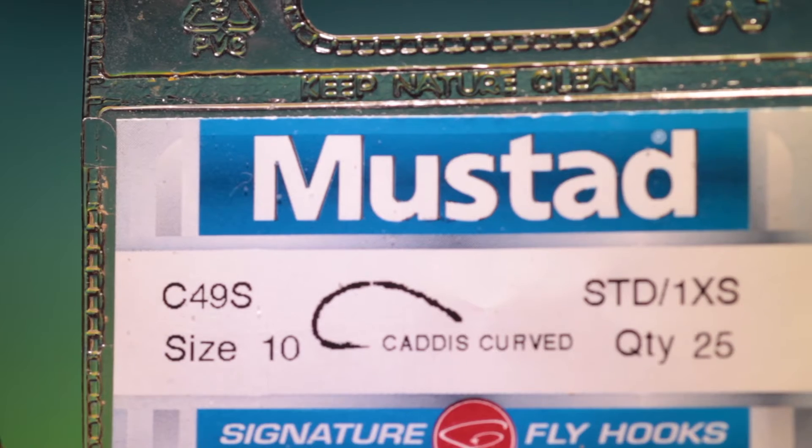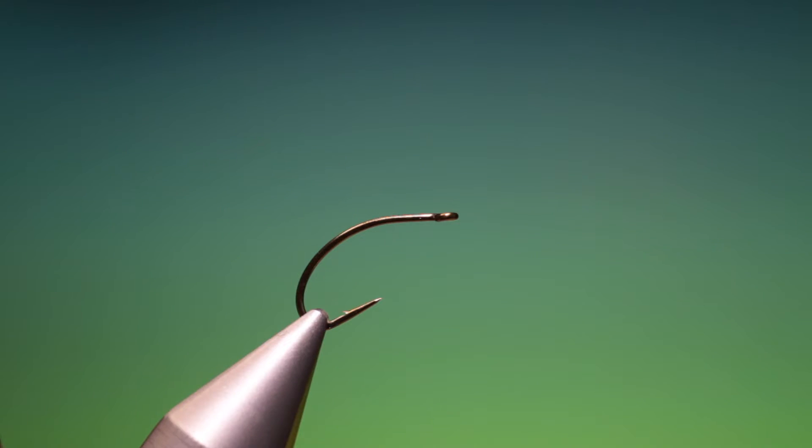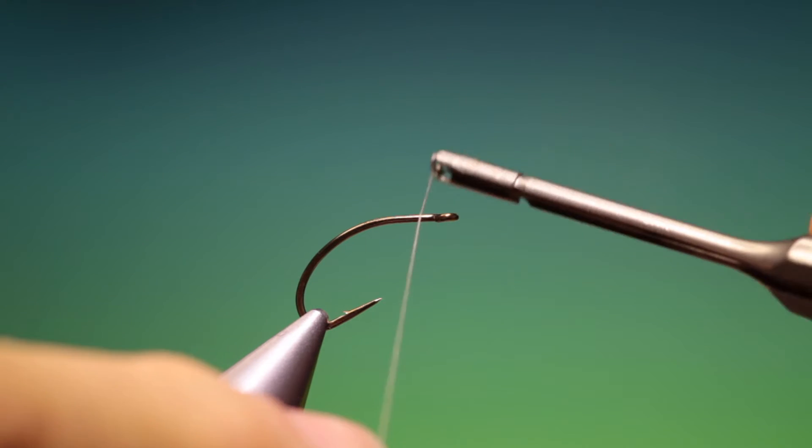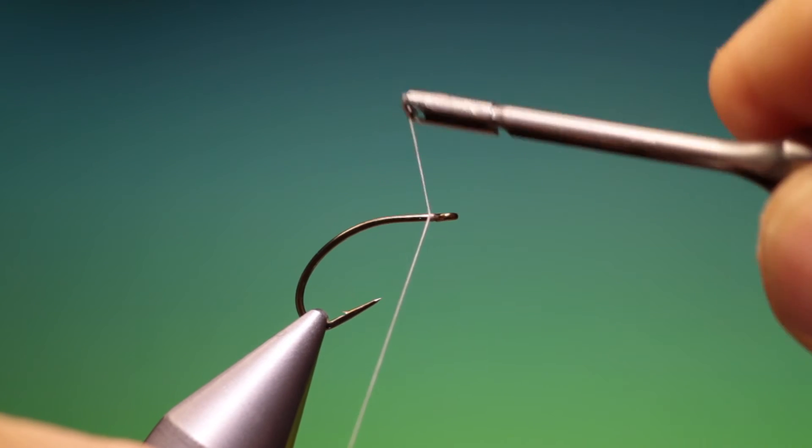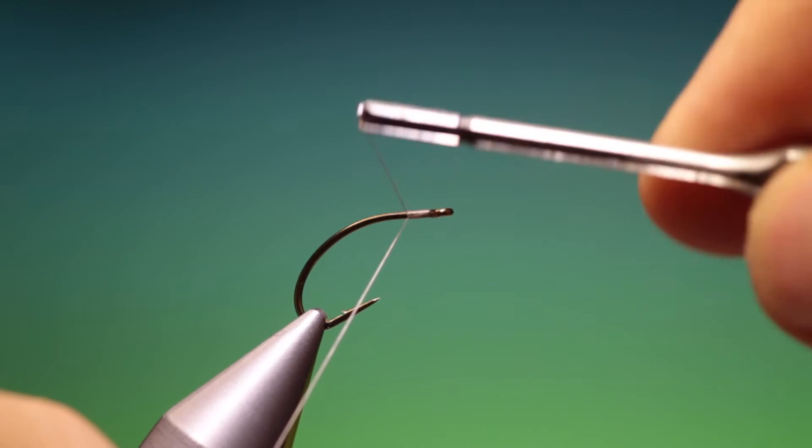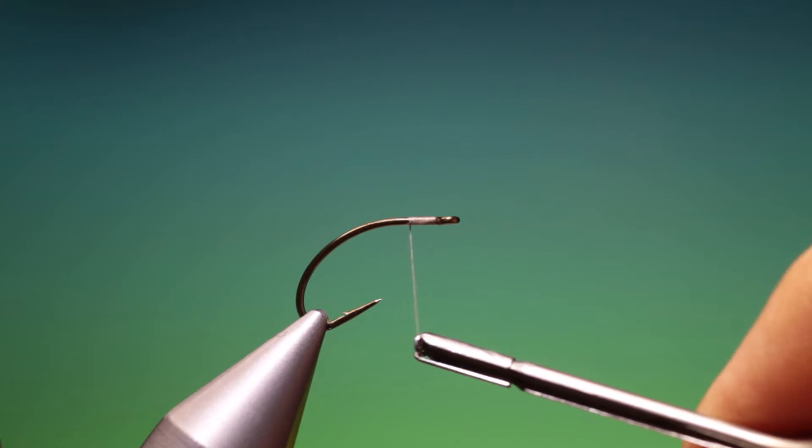We'll start with the Mustard C49S size 10, got some sheer 40 nought grey. What we want first is just a little tying thread at the front, about there.